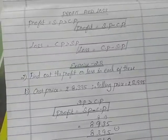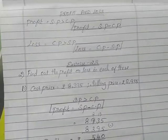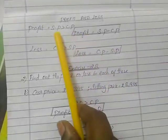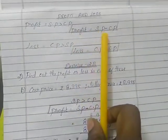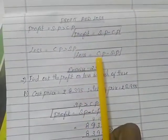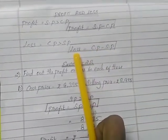Good morning students. Last class, we learned what is profit and what is loss. When selling price is more than the cost price, that is profit. The difference is profit. When cost price is more than the selling price, the difference is loss.